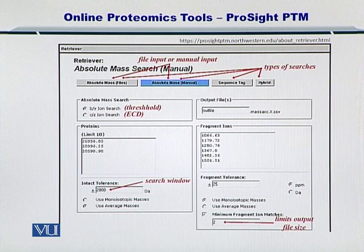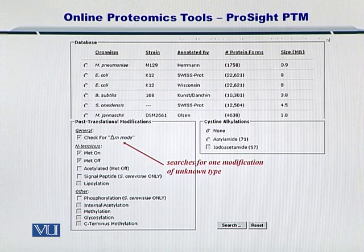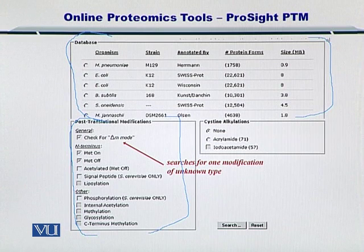The user interface is shown here. You can search by simply uploading your peak list, and you can provide different tolerances and the search mode, and it will give you results accordingly. You can also specify different types of databases to be used during the search, and you can look at different post-translational modifications, which are very important when you are trying to find the function of proteins in a sample.